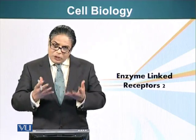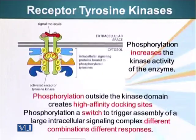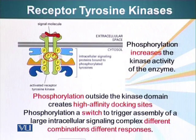When these phosphate domains are generated by these enzymes, it creates docking sites where specific proteins present in the cytoplasm can bind. These docking domains — these phosphorylation sites outside the kinase domain — serve as high-affinity docking sites.